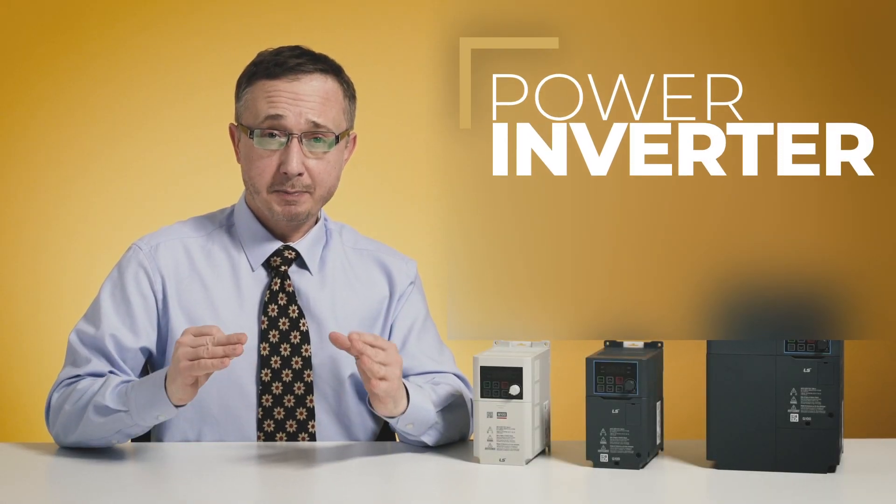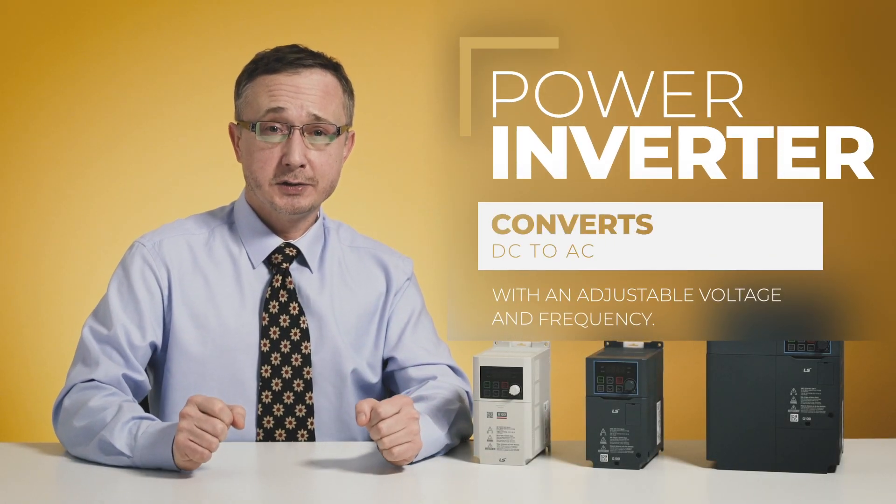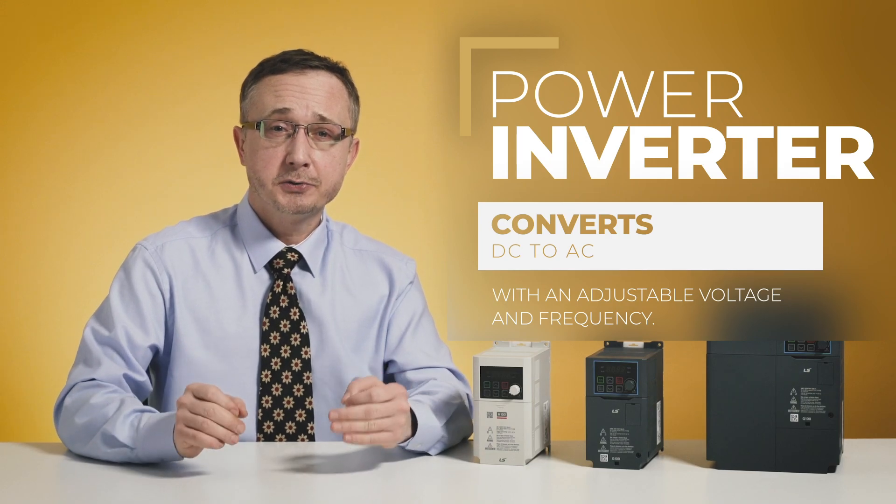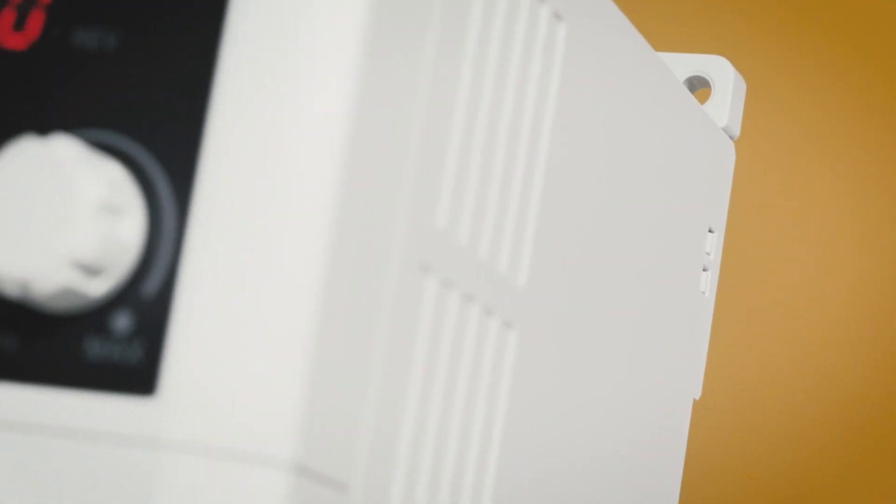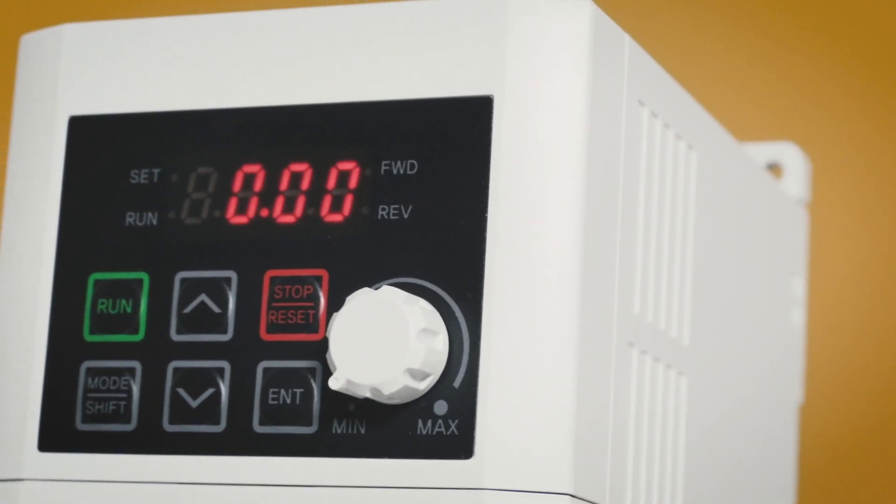To make it all clear, a power inverter is widely regarded to be an electronic device or circuitry that can change DC into AC power with an adjustable voltage and frequency.